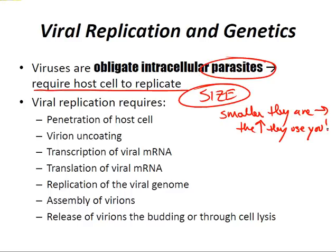Viral replication requires seven steps: penetration of the host cell, virion uncoating, transcription of viral mRNA, translation of viral RNA, replication of the viral genome, assembly of virions, and release of virions through budding or cellular lysis. Most RNA viruses replicate in the cytoplasm; most DNA viruses replicate in the nucleus. Enveloped viruses bud through a host membrane to acquire their envelope and do not lyse the cell.